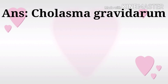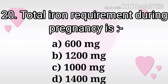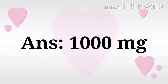Next question: Total iron requirement during pregnancy is? The options are 600 mg, 1200 mg, 1000 mg, and 1400 mg. The answer is 1000 mg.